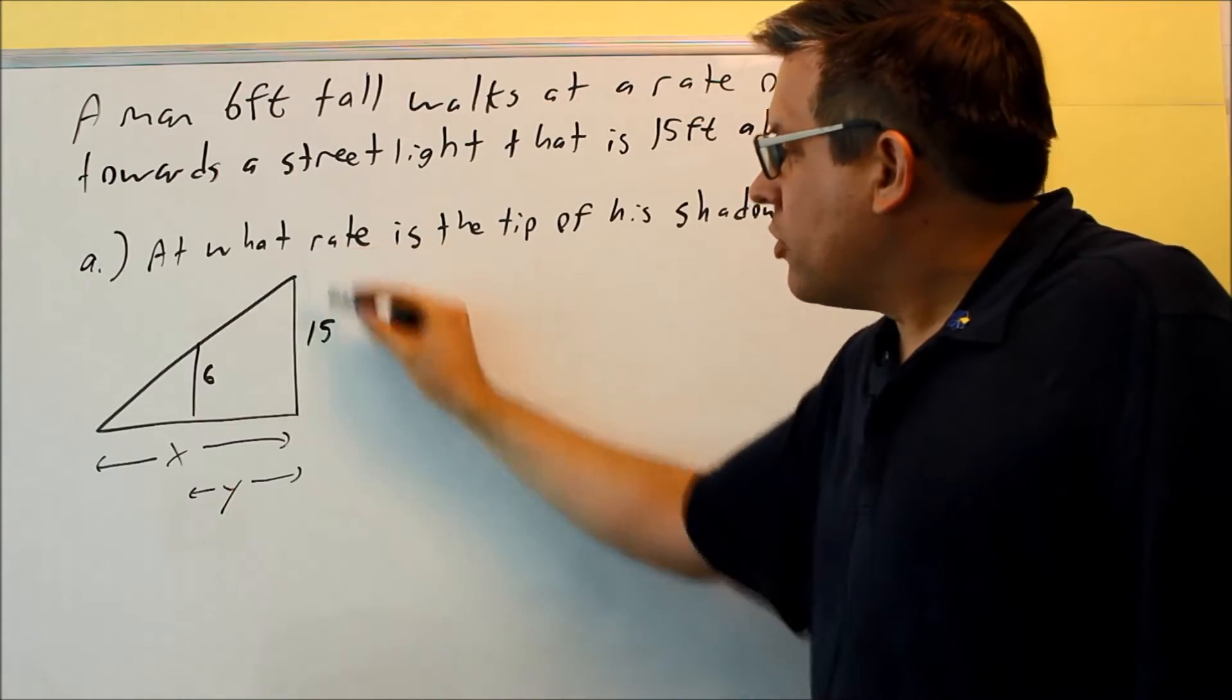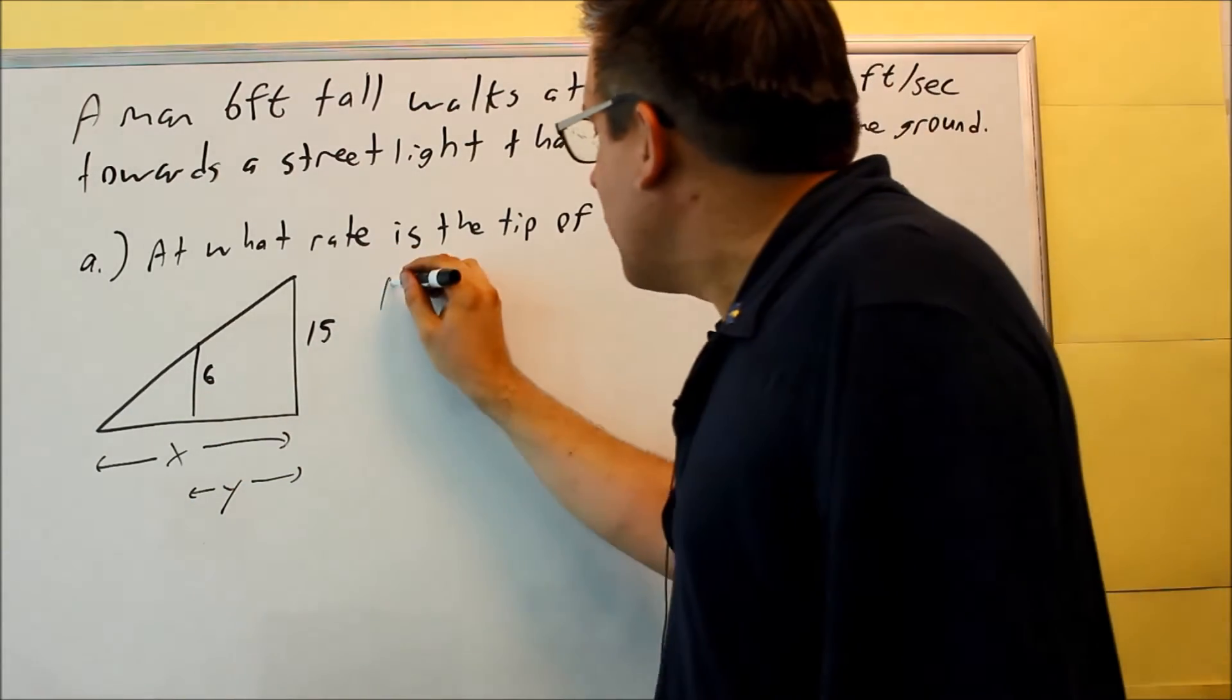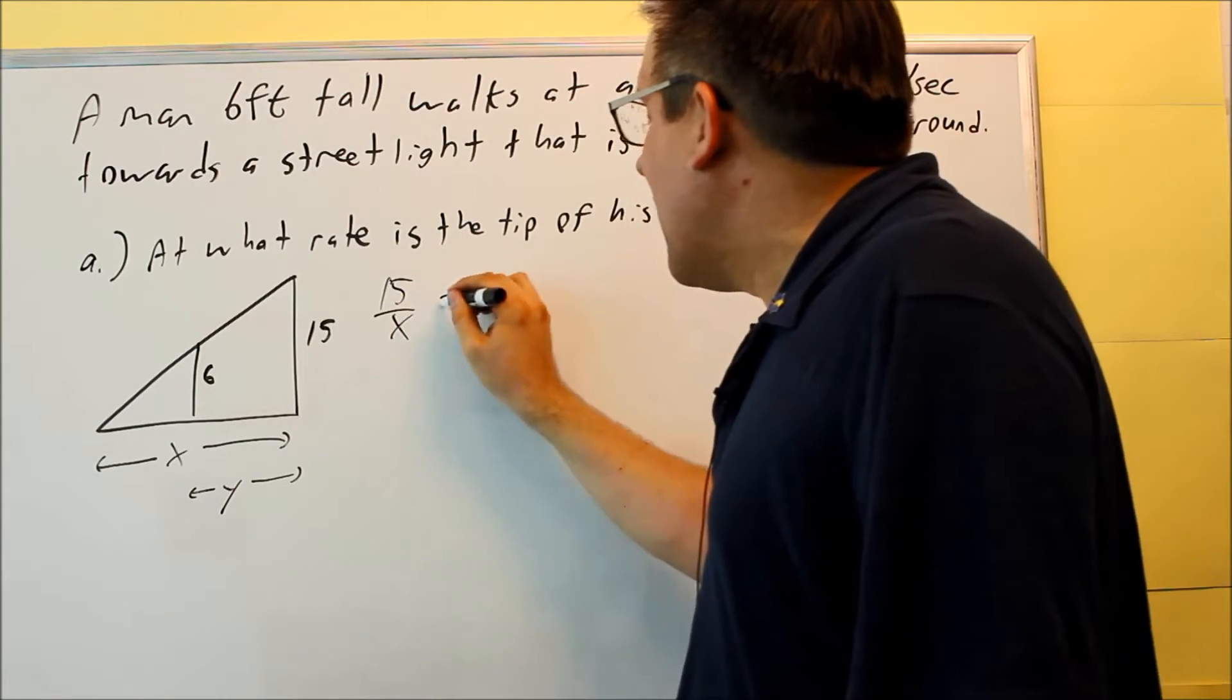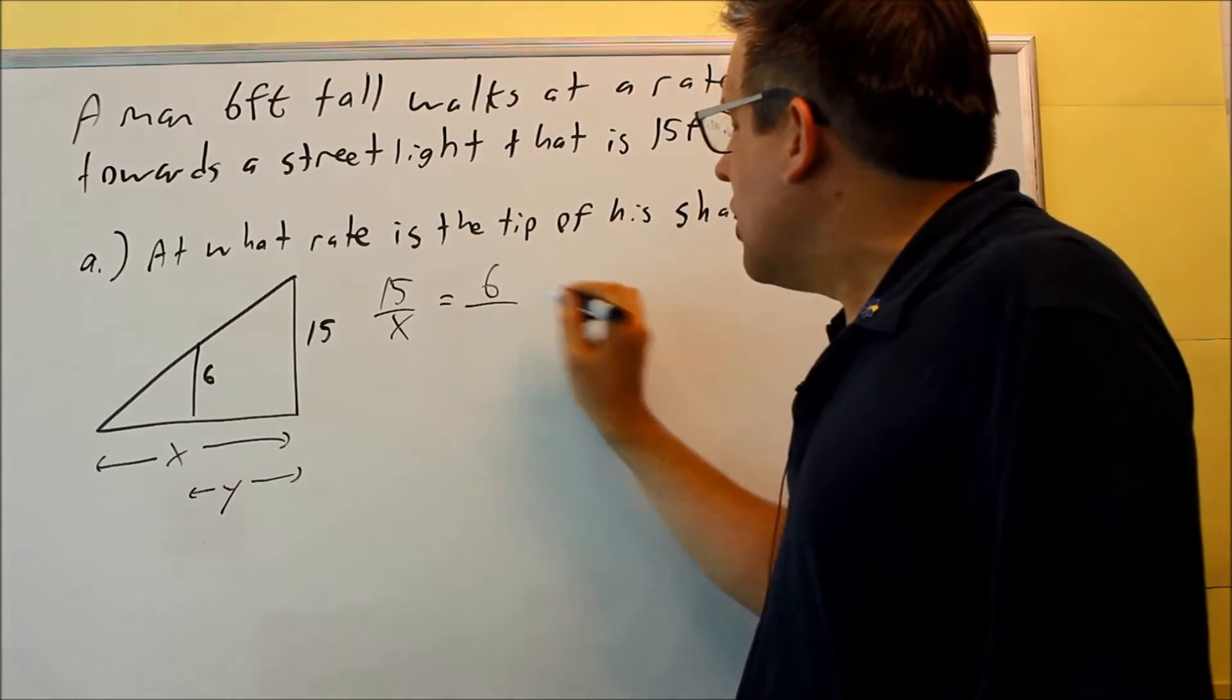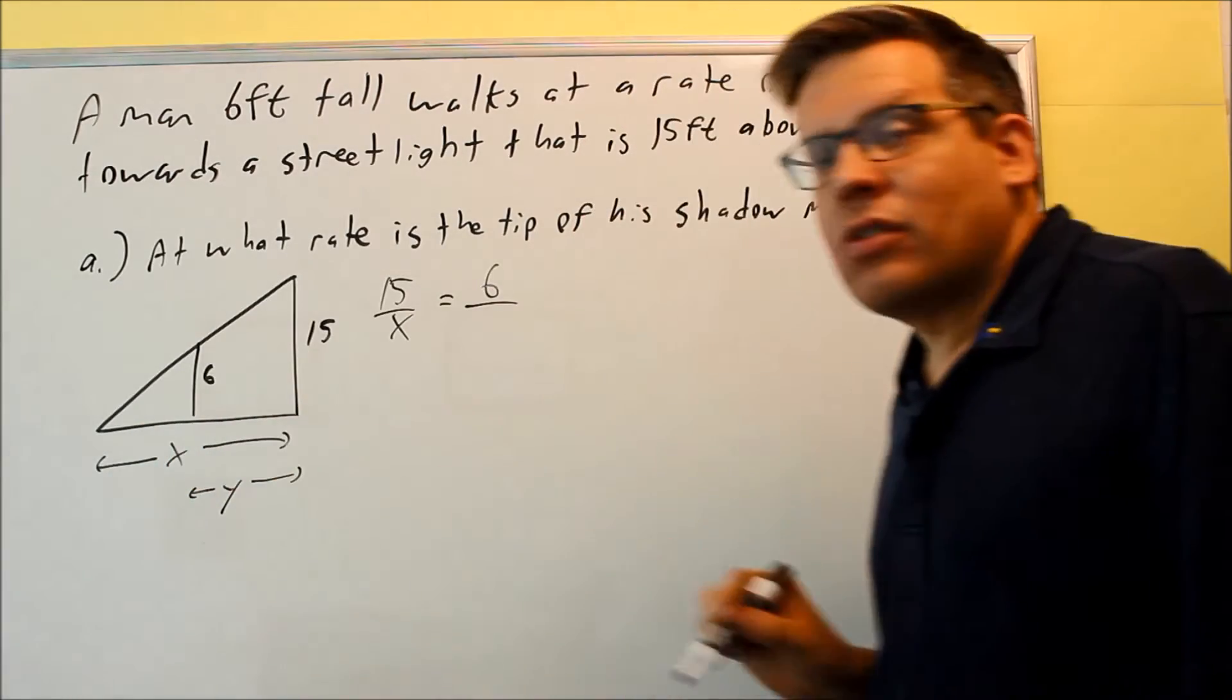So here's how I'll set it up. I'm going to do a vertical to a horizontal. So I'm going to do 15 is to x as 6 is to, we have to figure out what that length is.